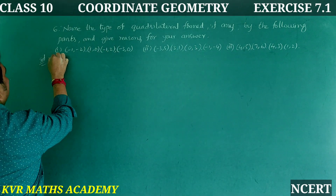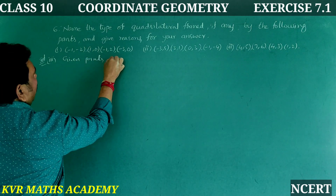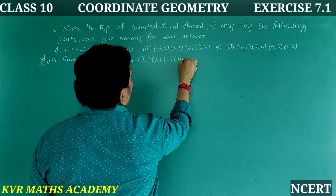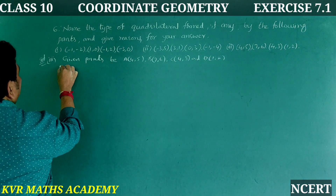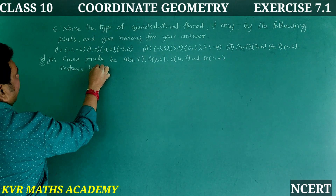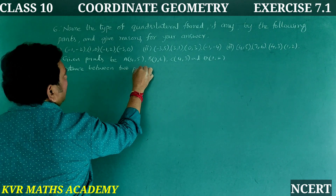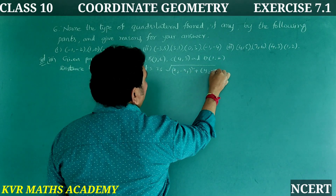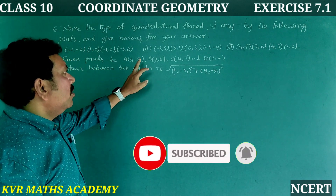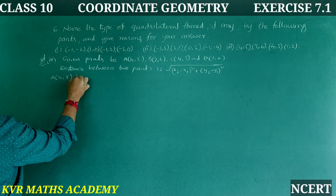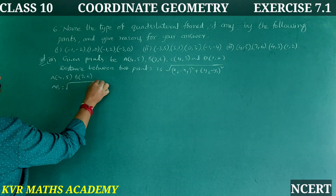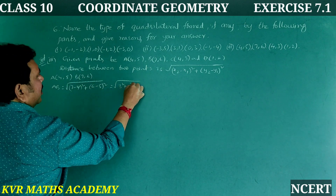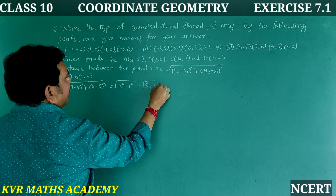Next, third solution. Given points are A(4, 5), B(7, 6), C(4, 3), and D(1, 2). Using the distance formula, let us find AB. A(4, 5) and B(7, 6). AB = root of (7 minus 4) whole square plus (6 minus 5) whole square = root of 3 squared plus 1 squared = root of 9 plus 1 = root 10.